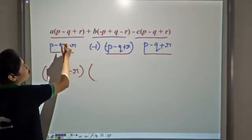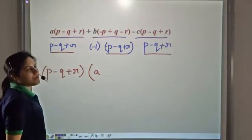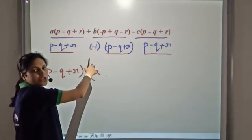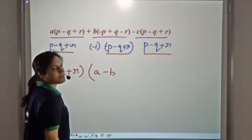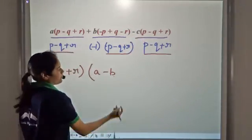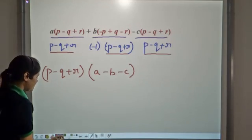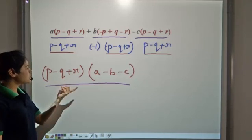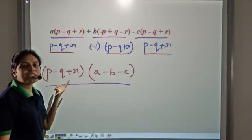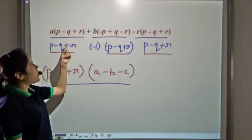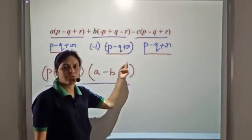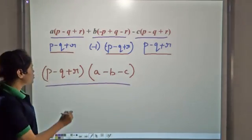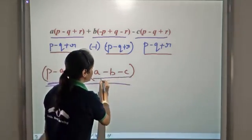We see what is left after taking (p-q+r) common. From the first term, we have a left. From the second term, we have b, and from the third term we had taken negative one common, so we have negative c. The factorized form is (p-q+r) times (a minus b minus c). Here we have taken an expression containing three terms as a common factor. So a factor of an expression can have any number of terms.